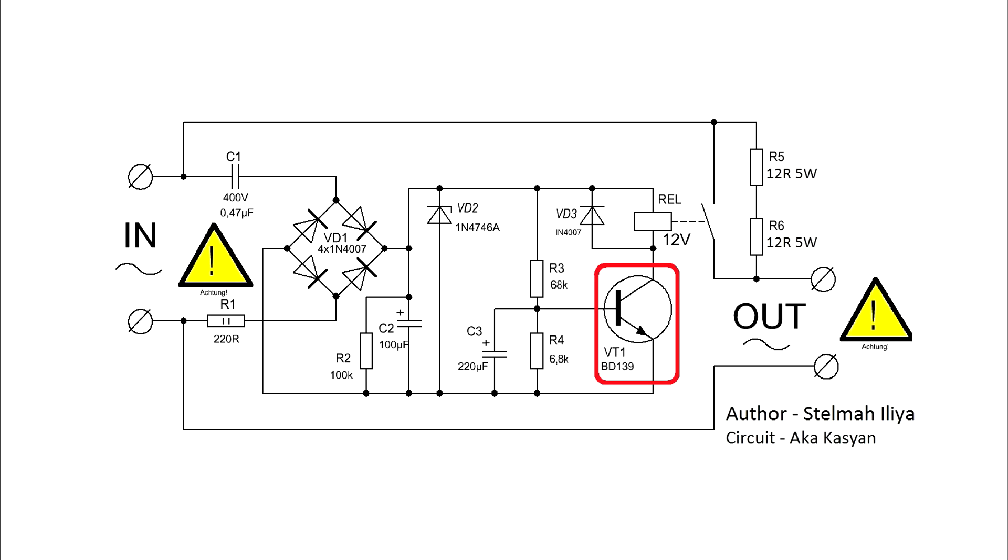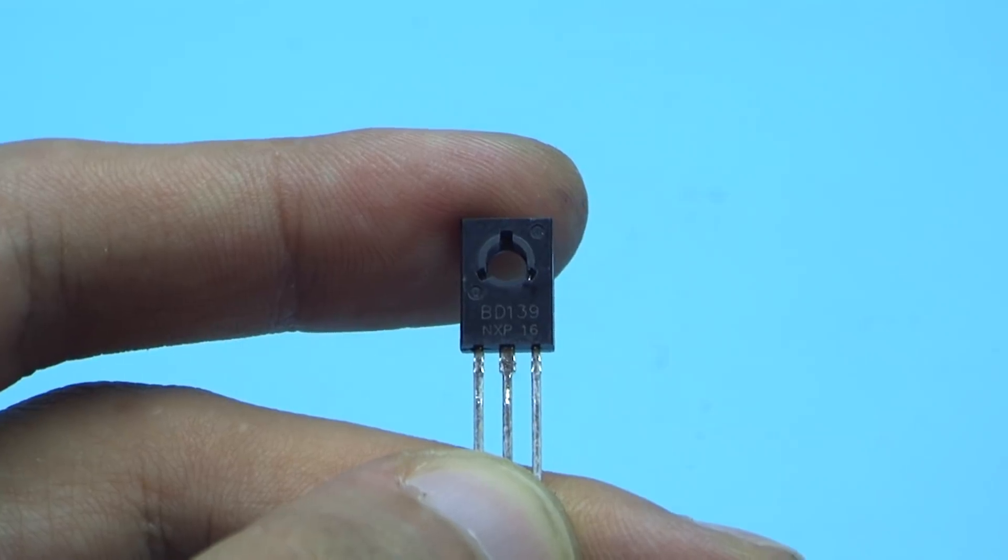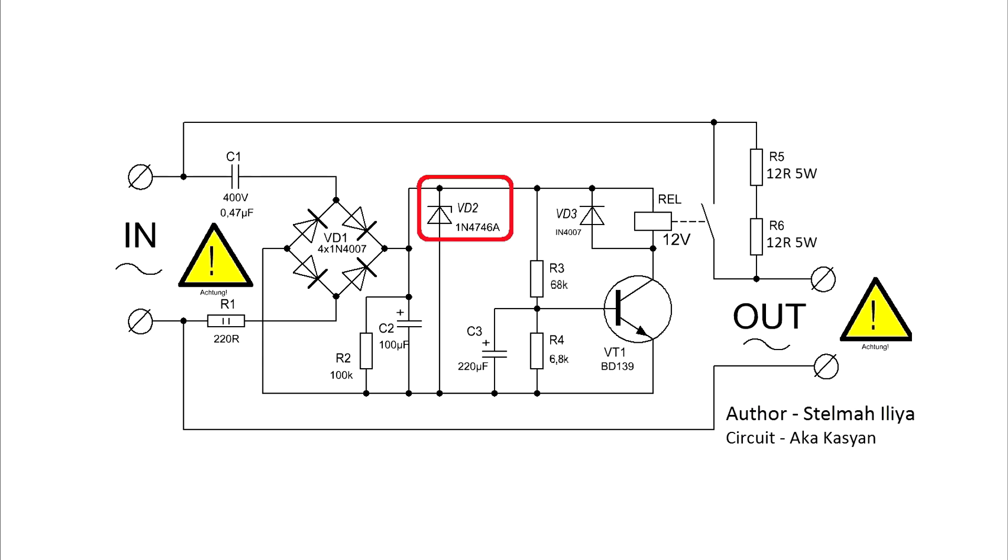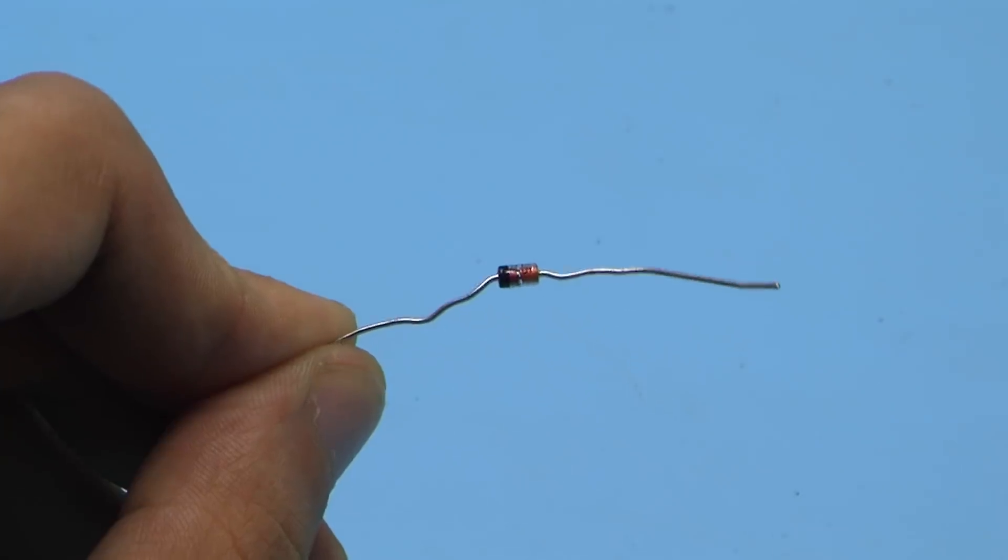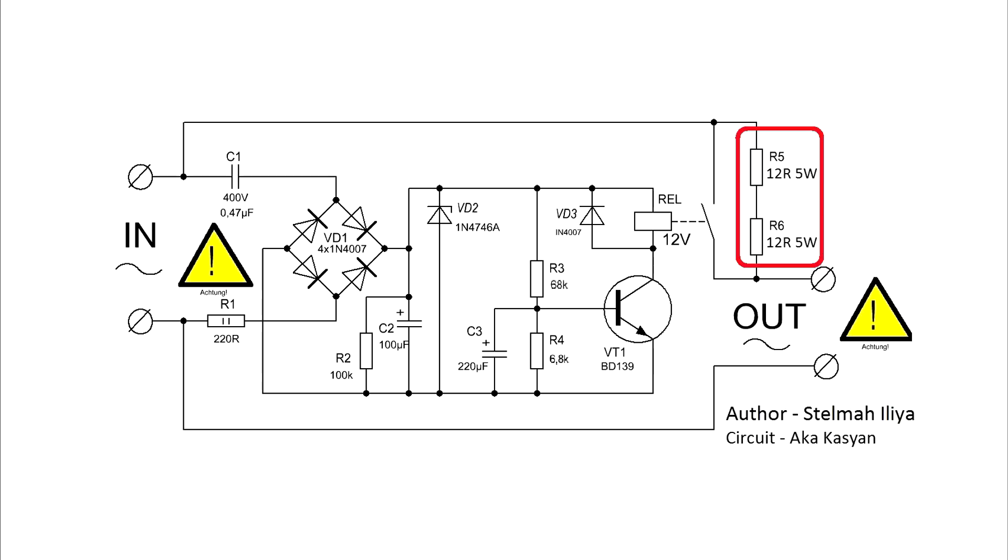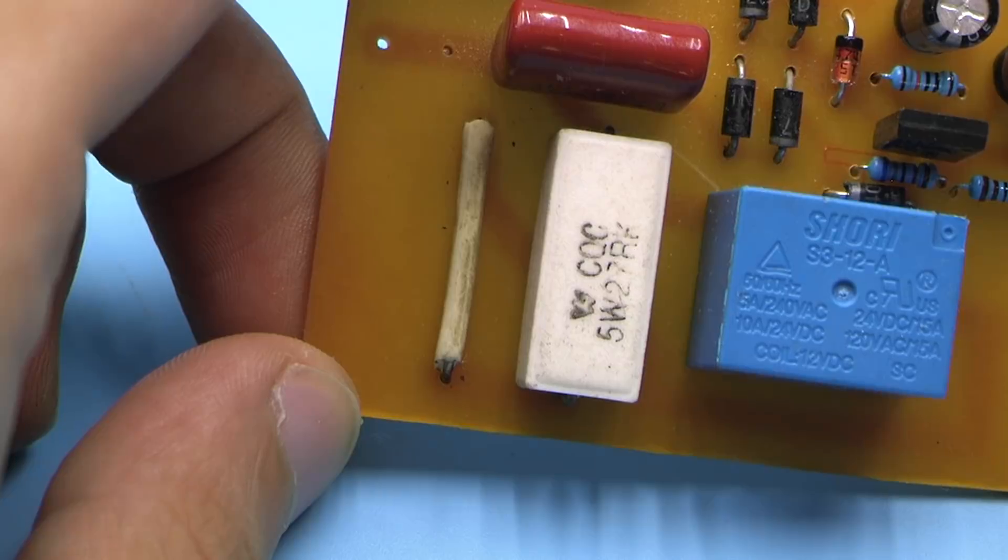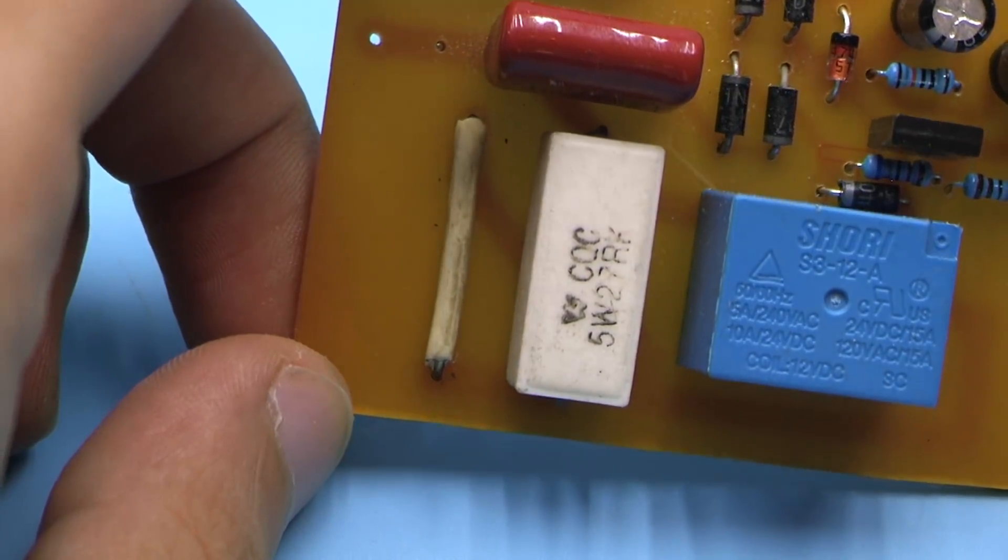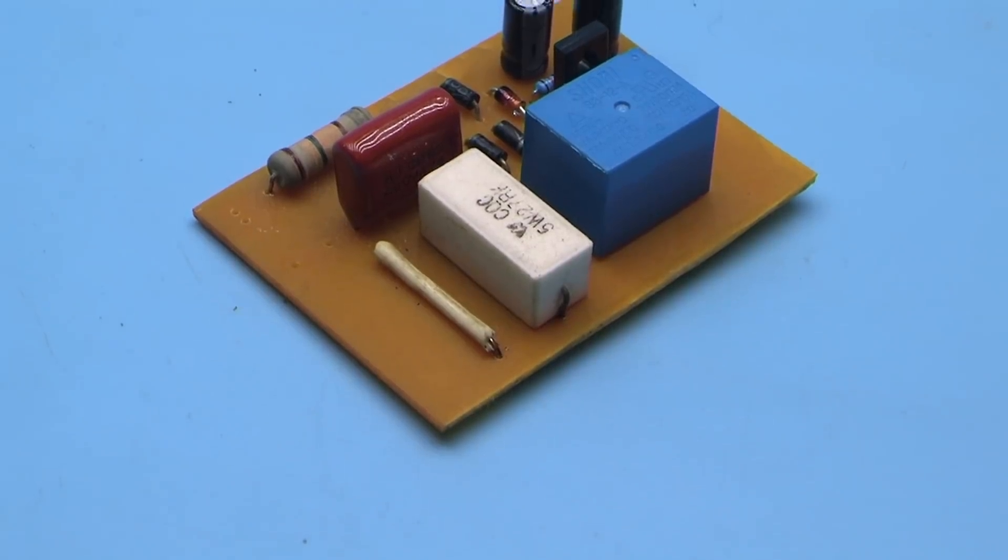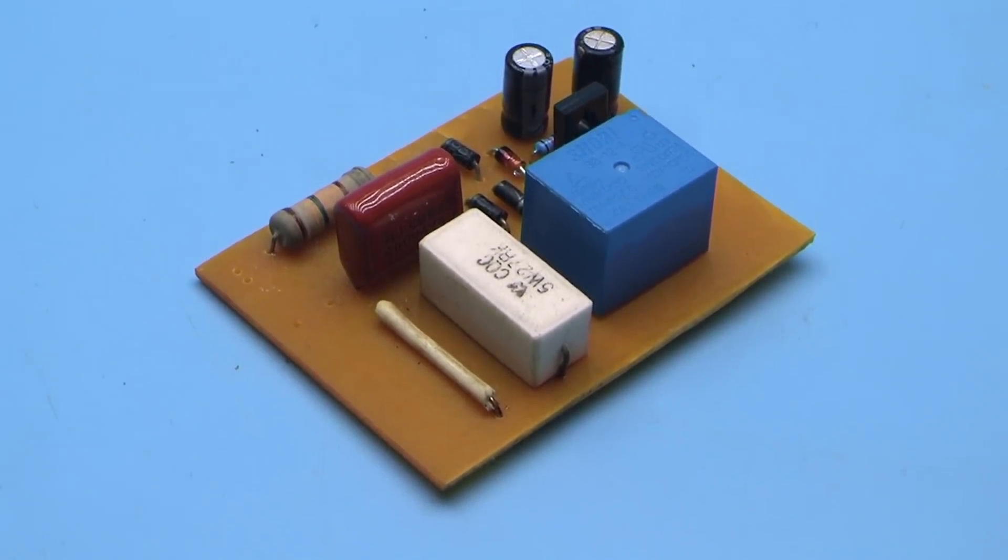Transistor: almost any reverse conductivity with a collector current of 1 ampere. In my case, it's BD139. Zener diode has power 1 watt and stabilization voltage from 12 to 24 volts. The limiting resistors can be from 10 to 33 ohms, preferably 15 to 20 ohms. The current limit for the circuit can be calculated according to Ohm's law.